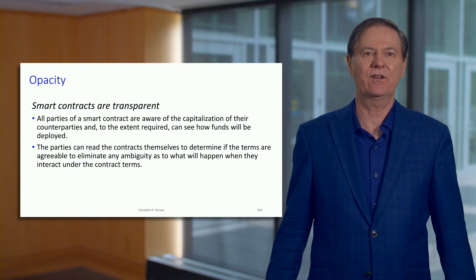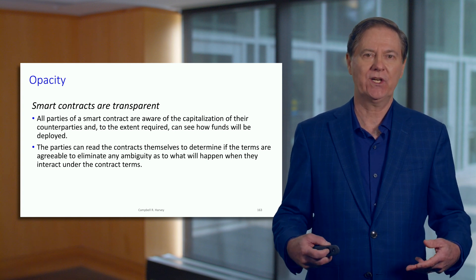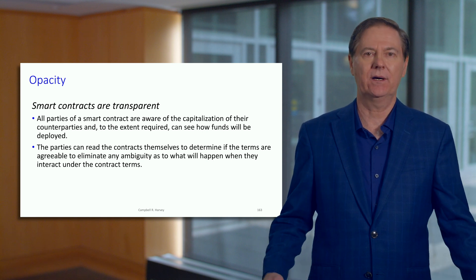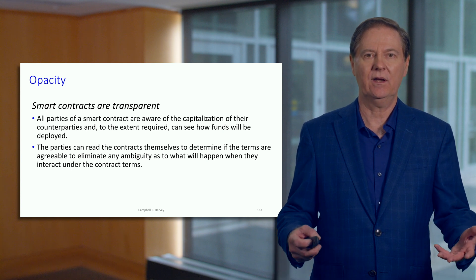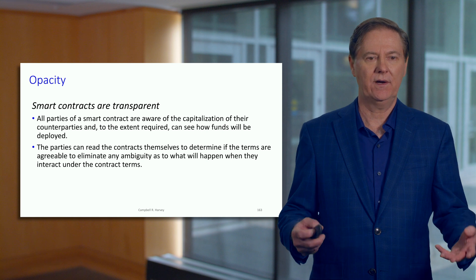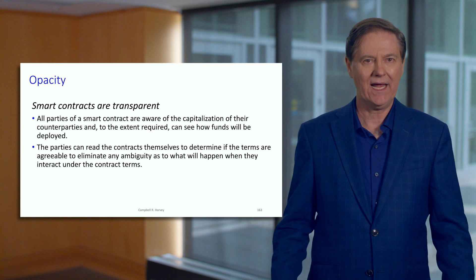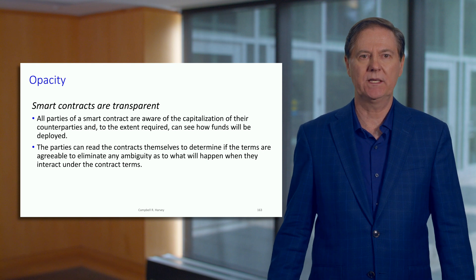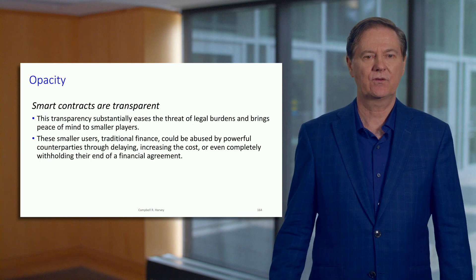Even in centralized finance, the bank doesn't really know how much capital their client might have — they can ask, but they're not sure. Within decentralized finance, it's immediate. The collateral is very, very clear. It's also possible to read the contract; it's there, and these contracts are usually fairly simple, so you can determine if the terms are agreeable to you.